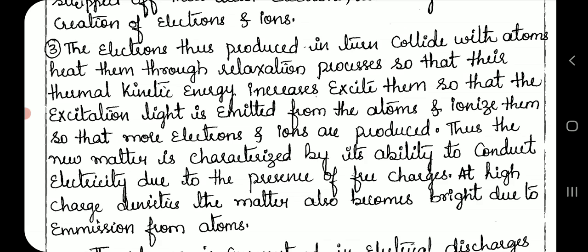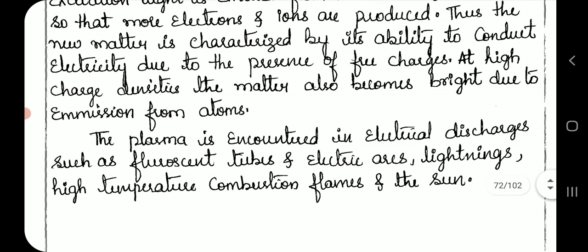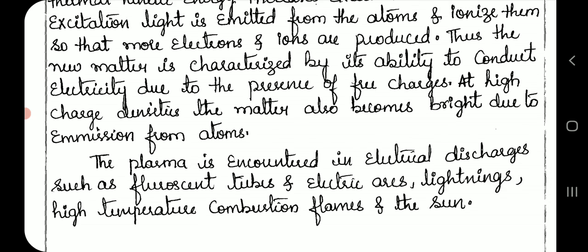At high charge densities, the matter also becomes bright due to emission from atoms. Plasma is encountered in electrical discharges such as fluorescent tubes and electric arcs, lightning, high temperature combustion flames, and the sun.